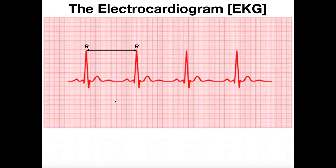In the previous video we talked extensively about how we interpret an electrocardiogram. We talked about what the P wave, QRS complex, and T wave each represent — they each represent a different electrical event of the heart. But what we can actually do is use the electrocardiogram to estimate a patient's heart rate, which is kind of cool. So I'm going to show you how to do that in this video.